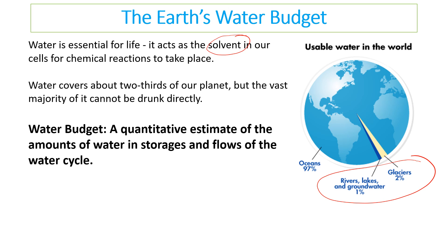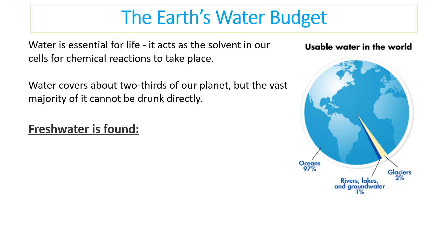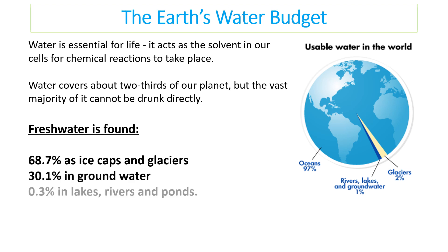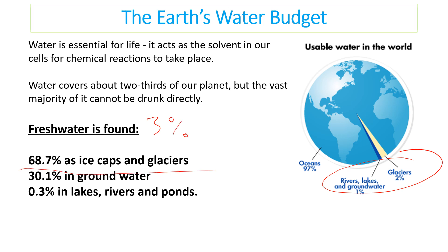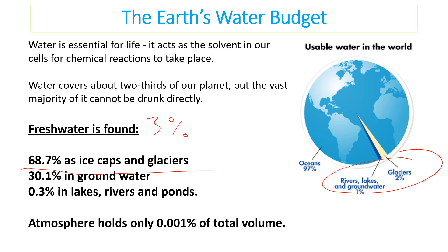The water budget is a quantitative estimate of the amounts of water in storages and flows of the water cycle, which make them available for us to drink. Of fresh water: 68% is found as ice caps and glaciers, 30% in groundwater, and 0.3% in ponds, rivers and lakes. So out of that total 3% that makes up fresh water, only around 30% of that is available to drink. The atmosphere holds about 0.001% of the total volume of water.